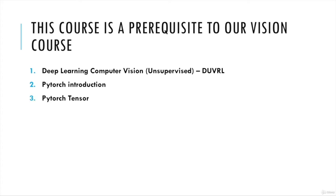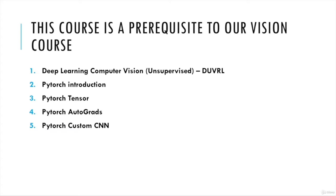We will talk about PyTorch tensors as well as how to manipulate them and various operations on PyTorch tensors. We will also talk about PyTorch computation graph as well as how to calculate PyTorch gradients or PyTorch autograd. At the end, we will also be building a custom small CNN using PyTorch. This basic and quick course on PyTorch will get you up to speed to take up advanced courses in deep learning using PyTorch.